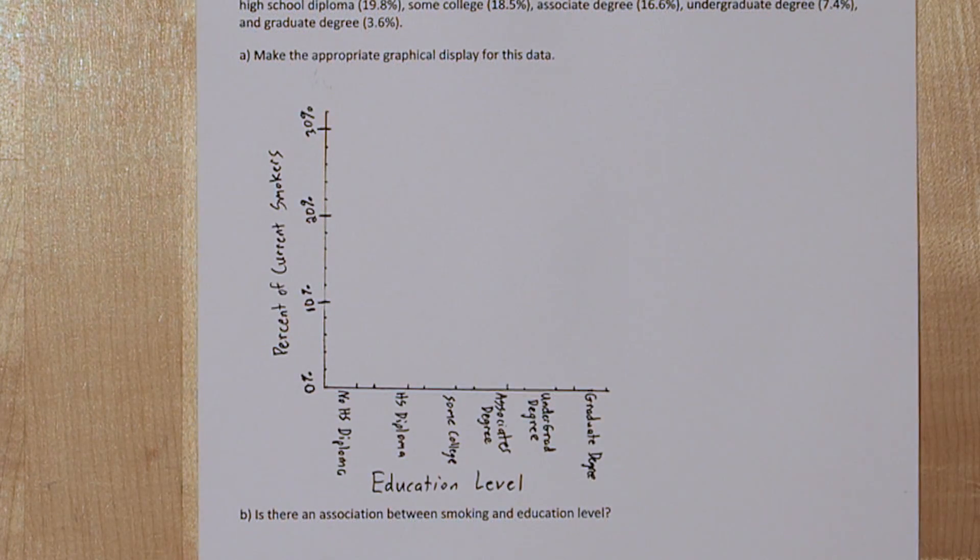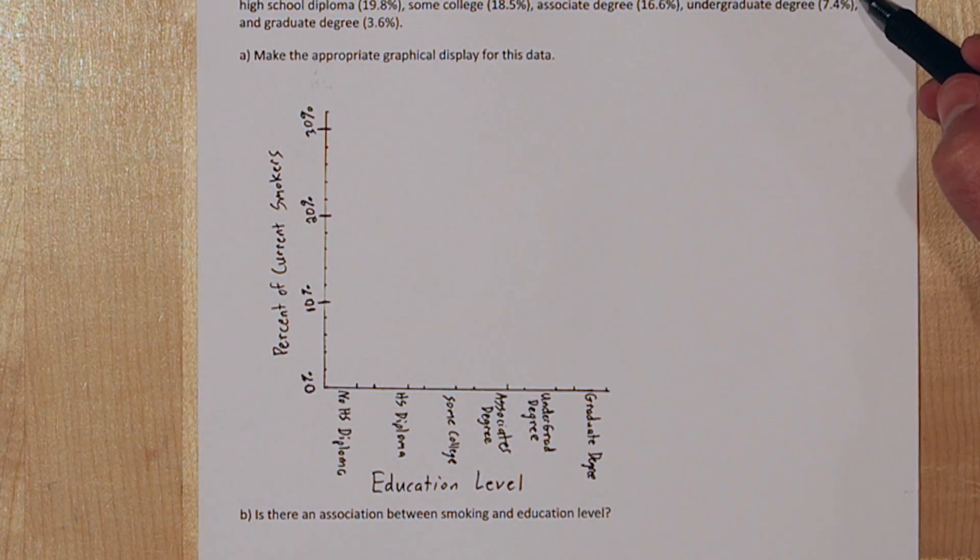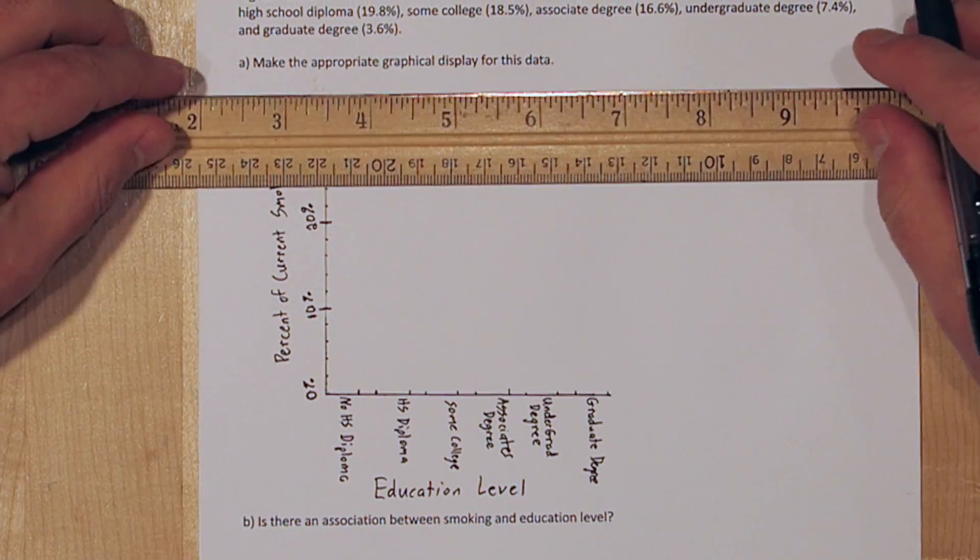On our x-axis we're going to put each of the education levels. Now that our axes are ready, all we have to do is add our bars.